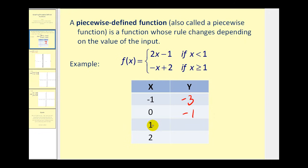When x equals one we use the second rule because one is greater than or equal to one, so we have negative one plus two which equals one. When x is two, two is also greater than or equal to one, so we use the second rule again: negative two plus two equals zero. Let's go ahead and graph this now.